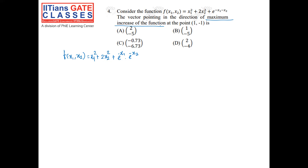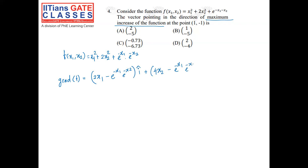The maximum increase of the function f is given by the gradient of that function. Taking the gradient: the i-component is 2x₁ - e^(-x₁) · e^(-x₂), and the j-component is 4x₂ - e^(-x₁) · e^(-x₂). The gradient gives us the direction of maximum increase of the function.